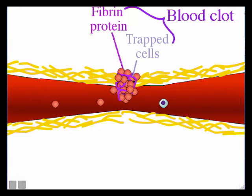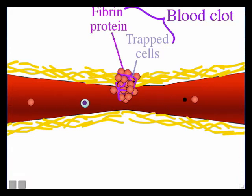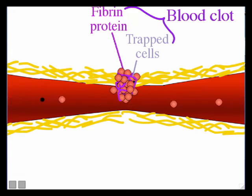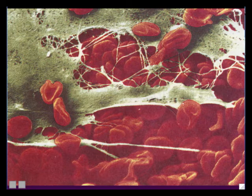That blood clot — that solid scab — is a web of fibrin proteins and all the trapped blood cells caught in that web. Together those are the blood clot, the coagulation. The blood clot is solid: it plugs up the break to stop the bleeding, and will also cover the break for many days or weeks until the tissues underneath can heal themselves. Here's an extreme microscope close-up of a blood clot where you can see lots of red blood cells trapped in there, and the fibrin proteins colored in green forming the spider web.